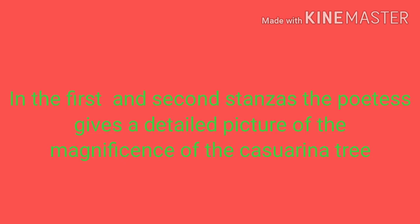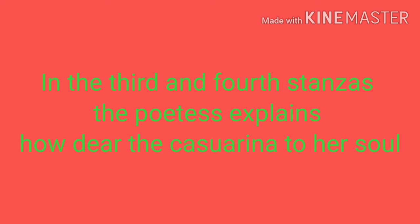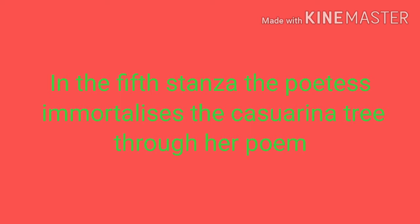In the first two stanzas, the poetess gives a detailed picture of the magnificence and grandeur of the Casuarina tree. In the third and fourth stanzas, she explains how dear the Casuarina tree is to her soul and how close it is to her memory. In the final fifth stanza, the poetess immortalizes the Casuarina tree through her poem.